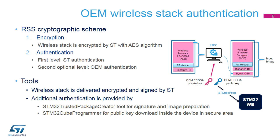The wireless stack is developed, encrypted, and signed by ST. Its encryption is ensured by the AES algorithm and its signature relies on an elliptic curve algorithm. A second authentication level can be added by the customer to ensure that only specified versions of the wireless stack can be downloaded. Customer authentication uses the same elliptic curve algorithm with a public-private key pair. The private key is used to sign the stack image using the STM32 Trusted Package Creator. The public key is stored in the secure part of the flash memory using the STM32Cube Programmer and a specific RSS service.